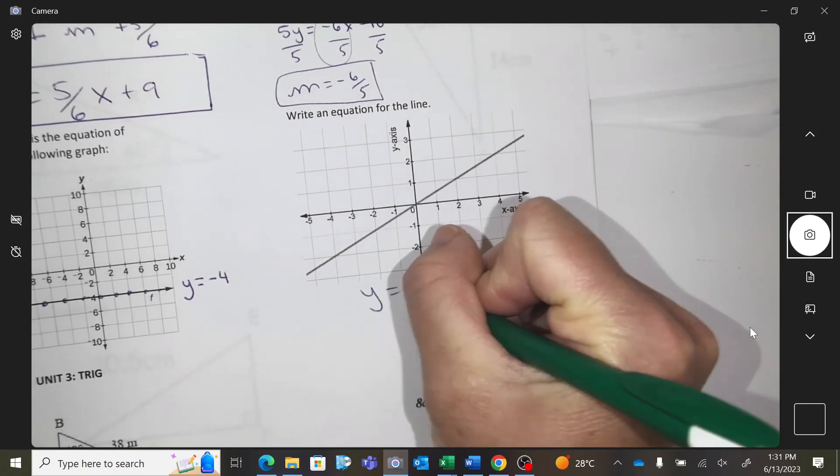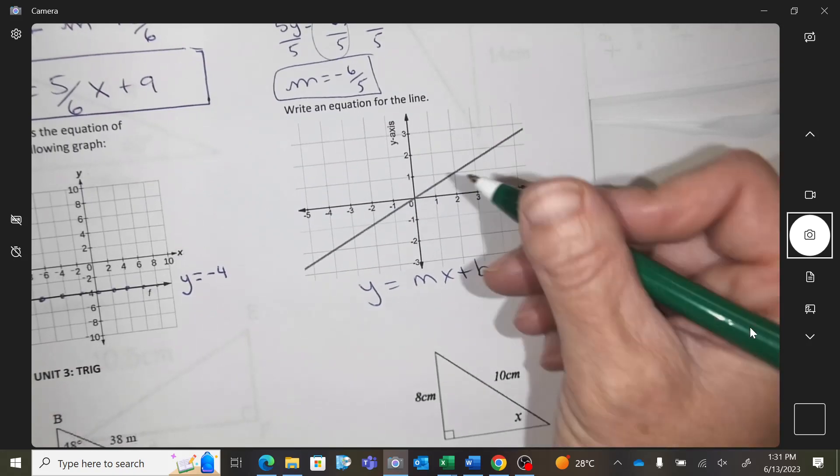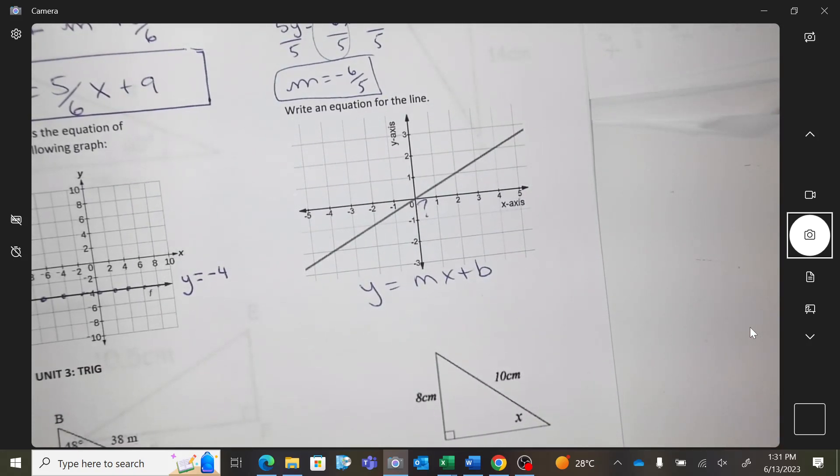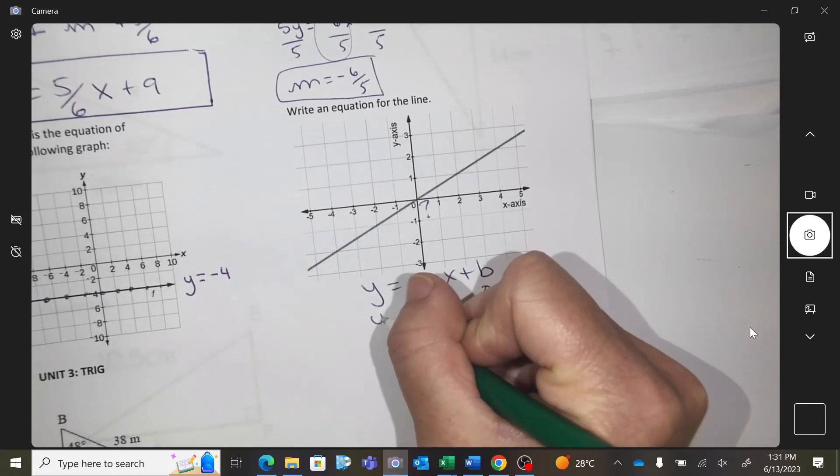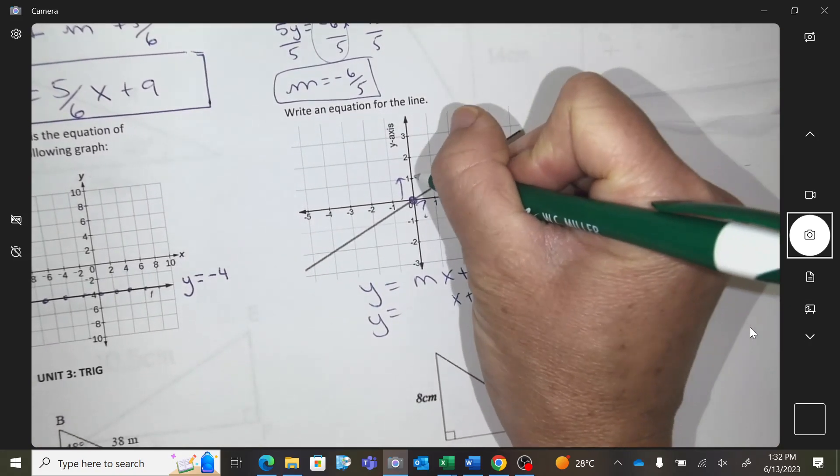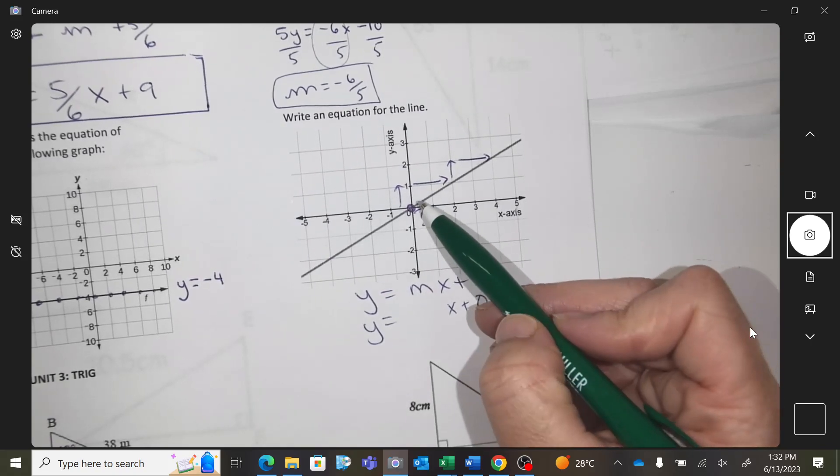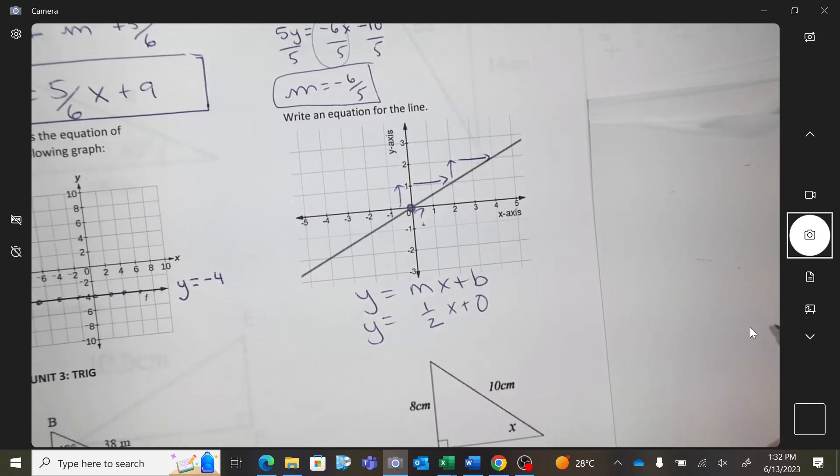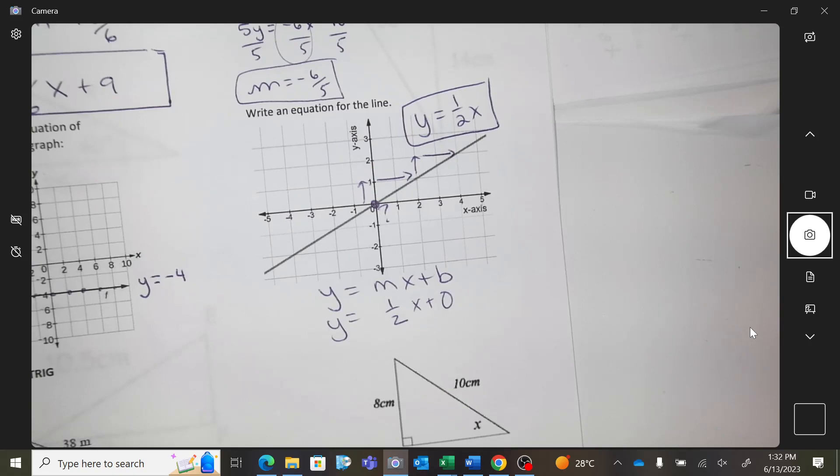So this one, I'm going to go Y equals MX plus B. And what is the Y intercept? Y intercept is zero. And what is the slope? From a point to another point what did you do? I went up one right two. You would see just one half X. There is a zero value as a y-intercept.